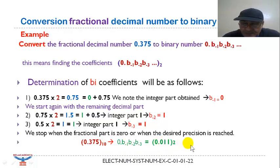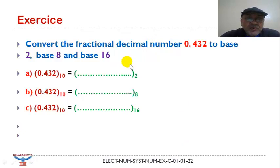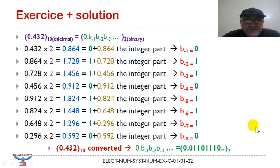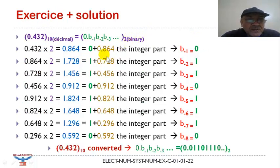Now we will proceed to solve this exercise. It consists in converting this fractional decimal number in base 2, in base octal, and in hexadecimal. For the first operation, consisting in converting this number to binary system, we search for B minus 1, B minus 2, B minus 3, and so on.